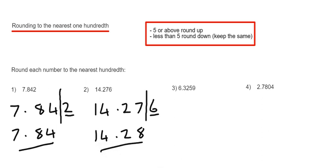Let's move on to example 3. This time we've got 6.3259. Again, we put a line in two numbers after the decimal point. We've got two choices: we can either round the number down to 6.32 or round the number up to 6.33. The number after the line is a 5. Since that number is 5 or above, we're going to round the number up to 6.33.